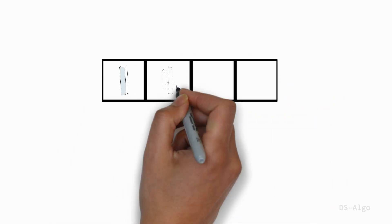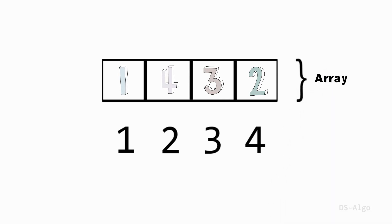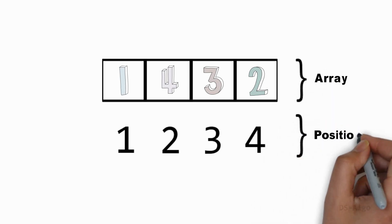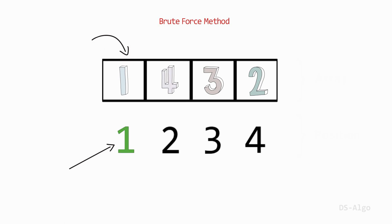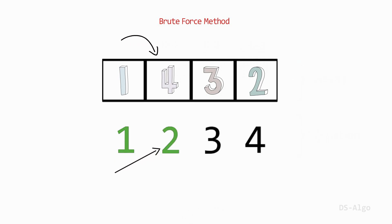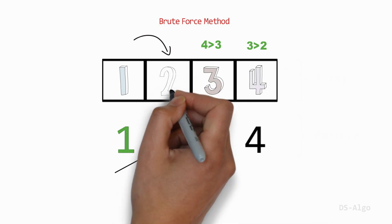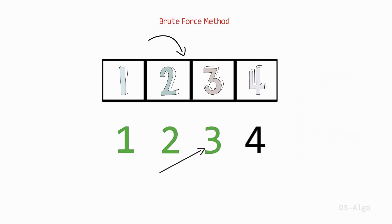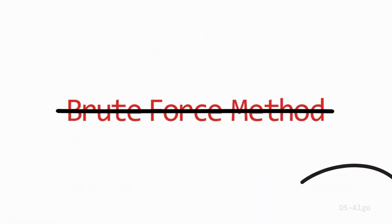Let array A be [1, 4, 3, 2] and the positions of this array are 1, 2, 3, 4. Most people, when they look at this problem, try to solve it using some sort of brute force method — basically finding the smallest element in the array and exchanging it with the element in the first position, then finding the second smallest and exchanging it with the second position, continuing this process until done. However, this method is not going to find the minimum swaps required.